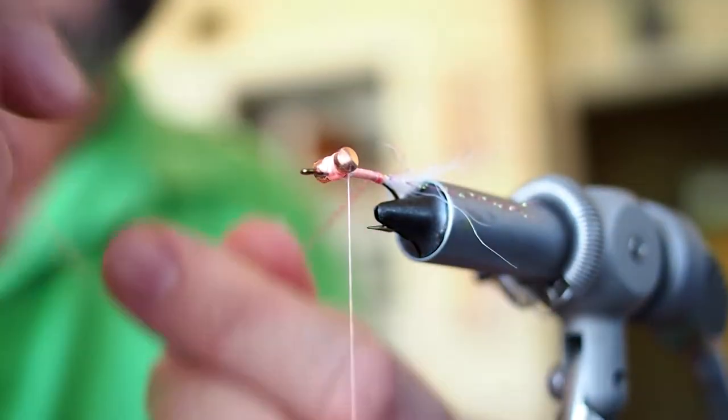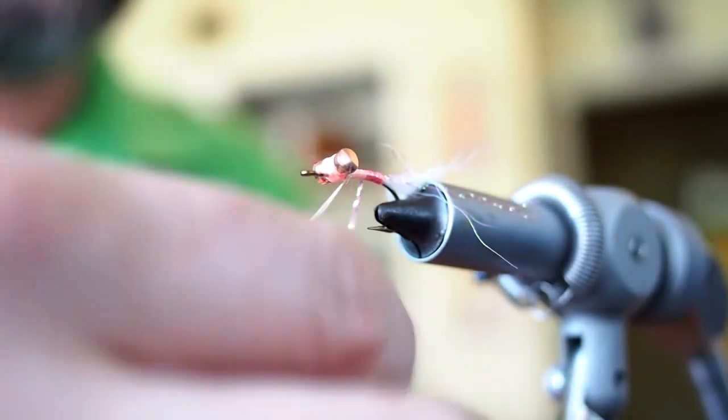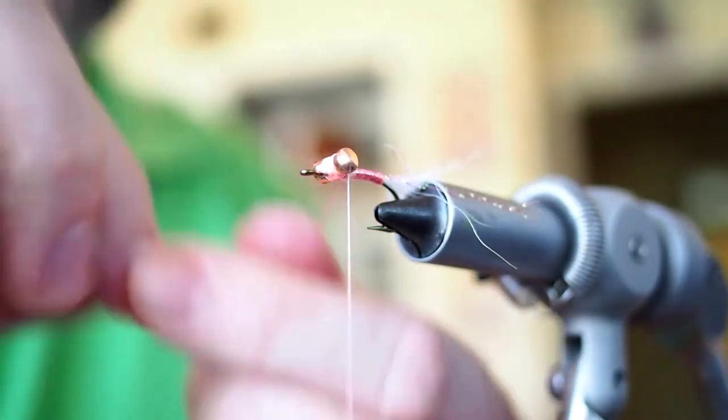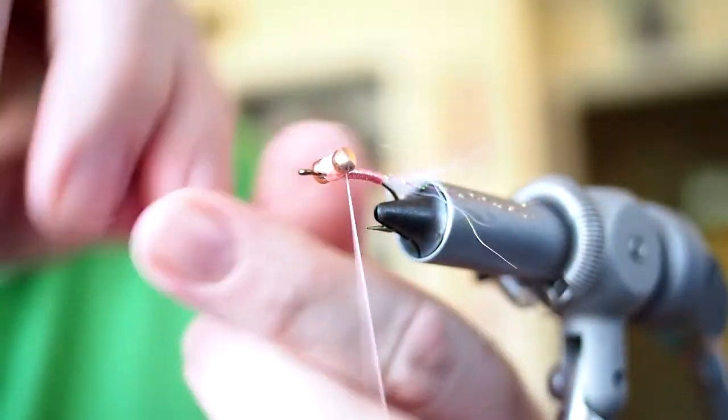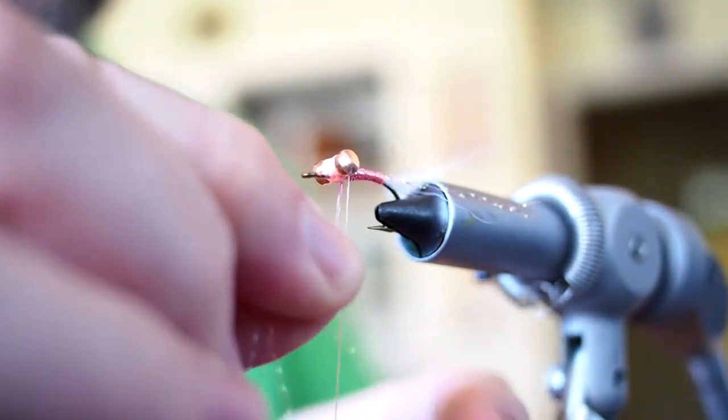So essentially we're wrapping the flash to create kind of a flashy throat on this fly. We're just going to advance that all the way up. If you've got enough, you can maybe take it down and back up again. I'll usually just go maybe halfway; it creates a little bit of a taper on the throat. I don't know that it's necessary, but it can make the fly a little more durable.